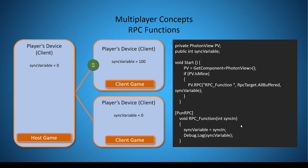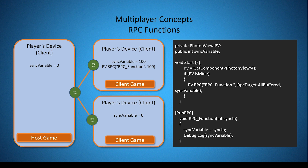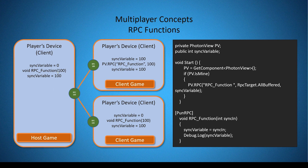Now let's look at the modified script. It's the same scenario, but with two changes. First, we've added a parameter to our RPC function of type int called syncIn. The value we're passing into the RPC call is the sync variable. Within the RPC function, we set our sync variable equal to syncIn. So the local client calls the RPC passing in the value 100. The RPC is sent out to all other players, and all clients — including the local player — execute the RPC function. The sync variable on all clients is then set to the value of our syncIn parameter, which is 100, and we debug that value to the console.